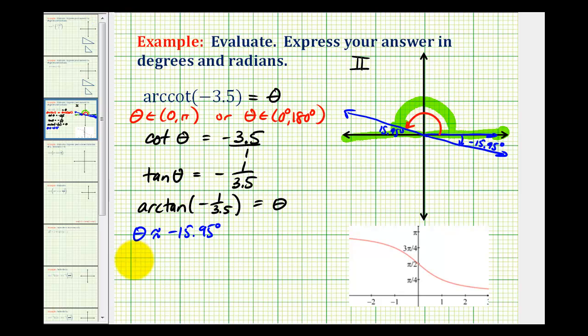So our angle theta, which has to be in these intervals, would be approximately equal to negative 15.95 degrees plus 180 degrees.